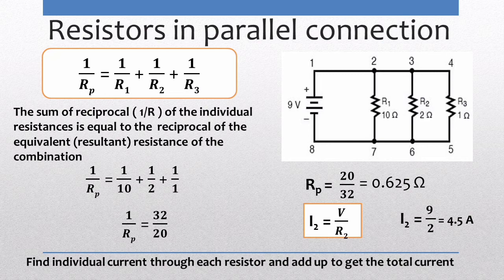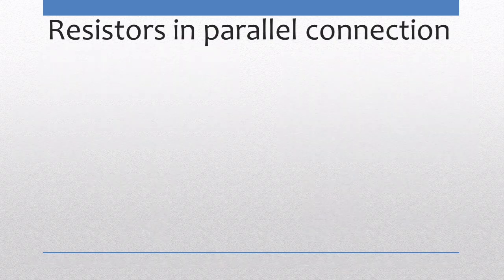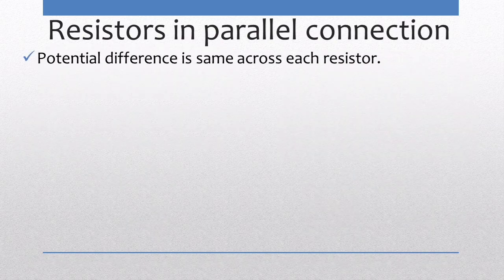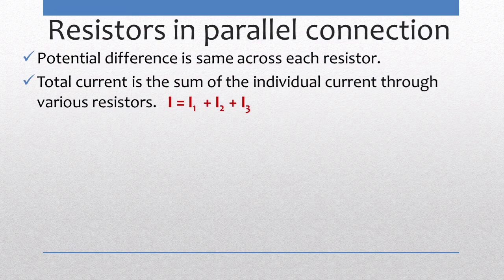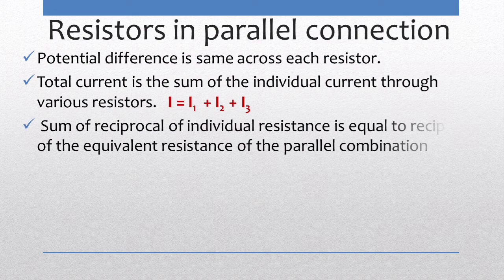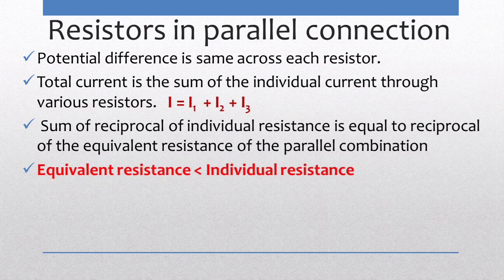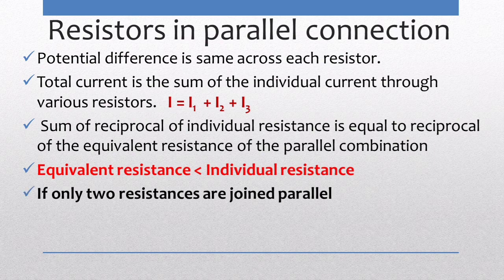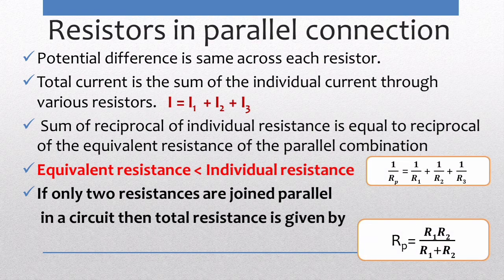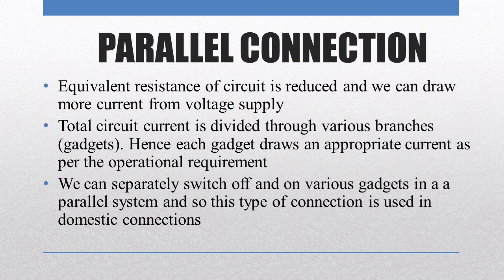In a parallel connection, the potential difference is the same across each resistor. The total current is the sum of the individual currents through each resistor. The sum of the reciprocals of individual resistances equals the reciprocal of the equivalent resistance. The equivalent resistance in a parallel connection is always less than any individual resistance. For two resistances, Rp = R1·R2 / (R1 + R2). The advantage of a parallel connection is that each gadget can be switched on and off independently, making it suitable for domestic wiring.